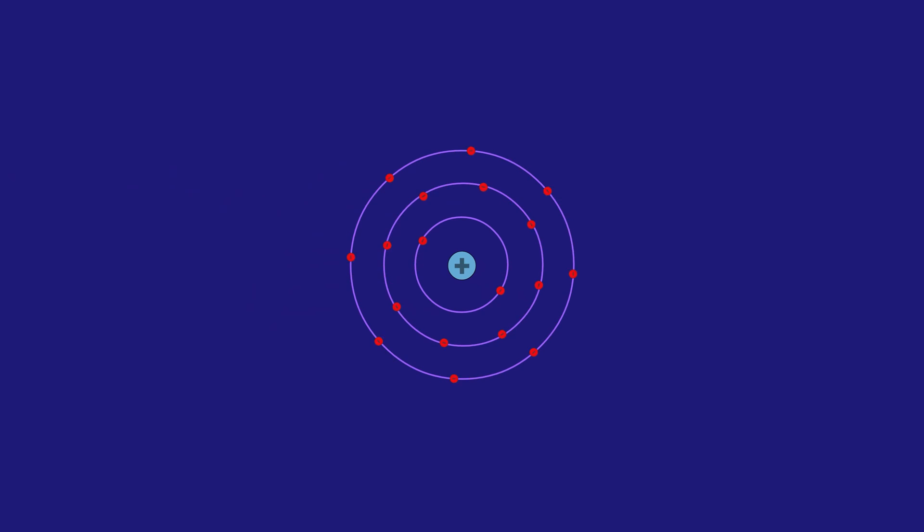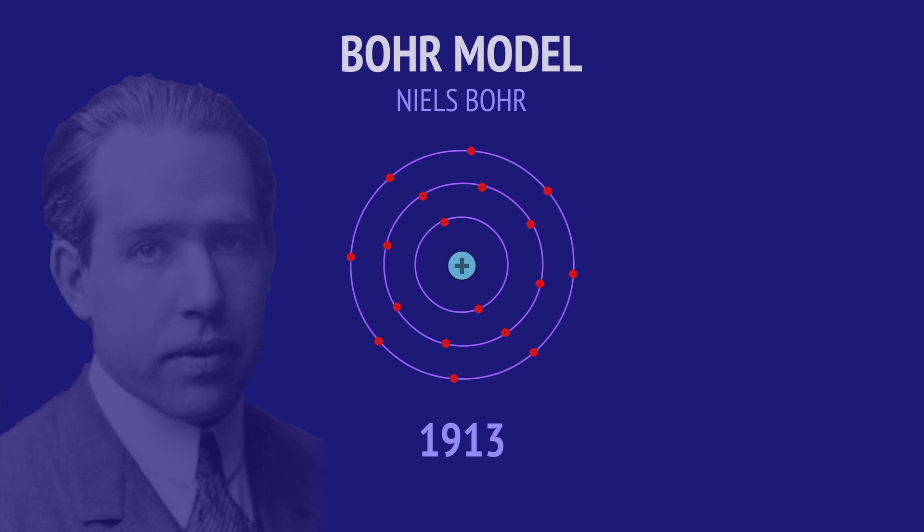Two years later, in 1913, Niels Bohr proposed that electron orbits were fixed, like planets orbiting the sun. This idea of stable electron orbits gave rise to the Bohr model.